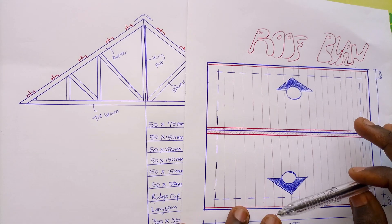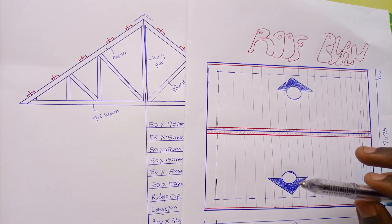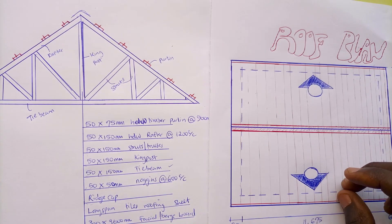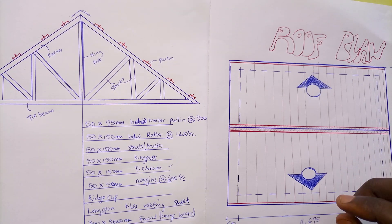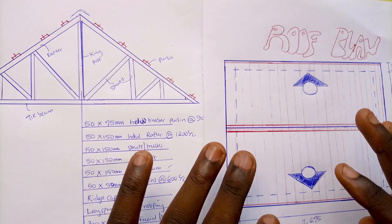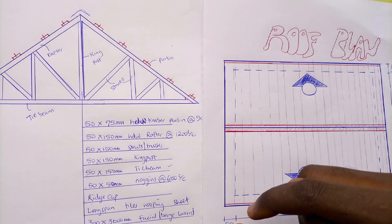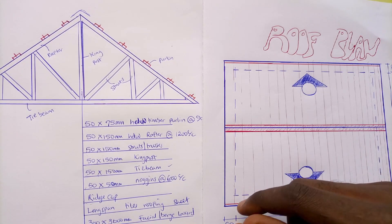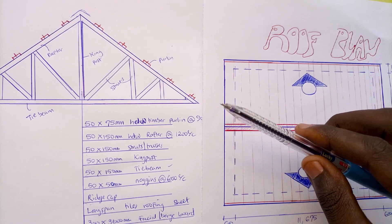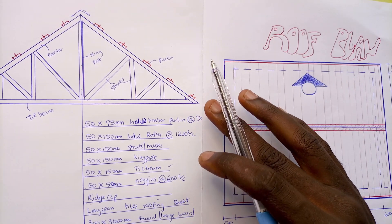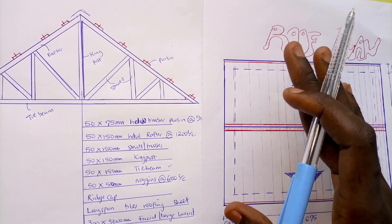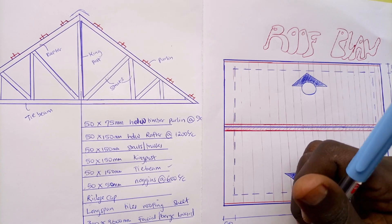Those are all the items you need to get familiar with to effectively carry out your measurement for roof work as a quantity surveyor. I'm going to be doing the measurement — the taking off proper — but that will be exclusively for the members of this channel. If you want access to the taking off for this particular roof plan, click on our join button linked in the description box below.